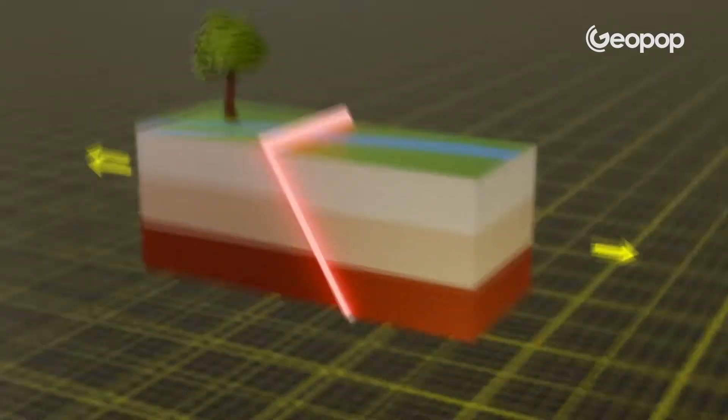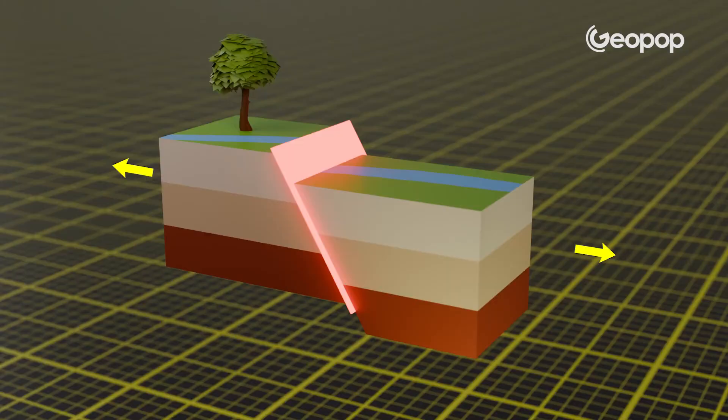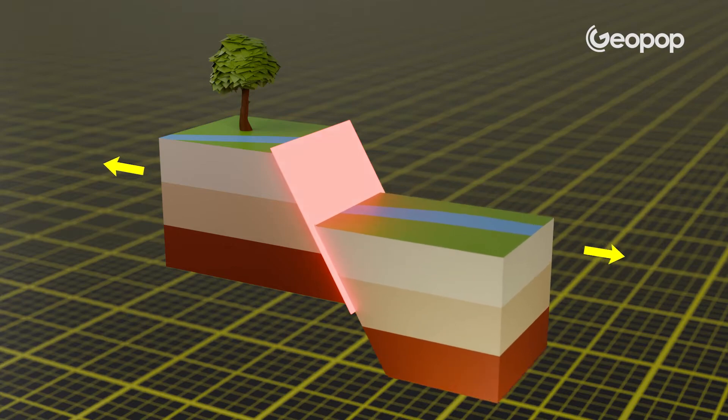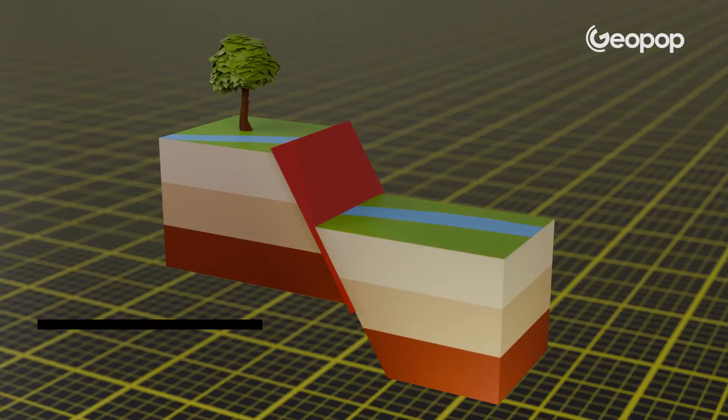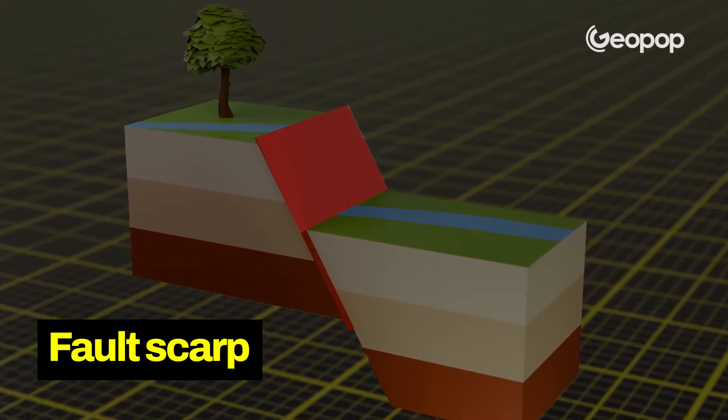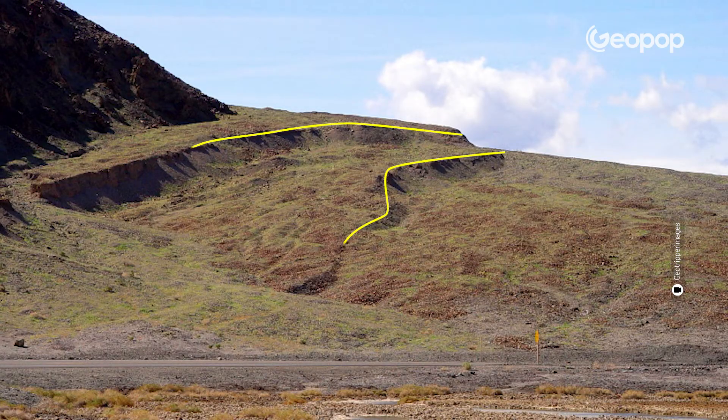Every fault, moving again and again over a geological timescale, can produce countless earthquakes of varying magnitudes. With each movement, a step forms that can range from a few centimeters to a few meters in height. When a fault scarp is formed — that's what the step is called — if it's several meters high, it means the earthquake was a really powerful one.